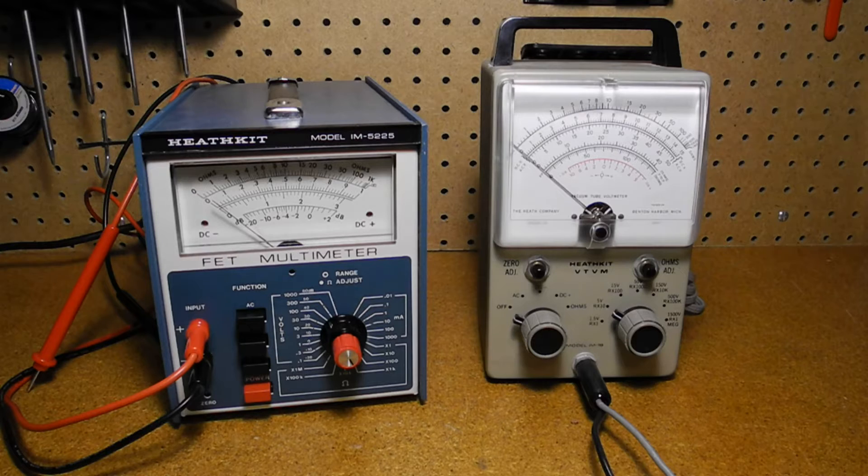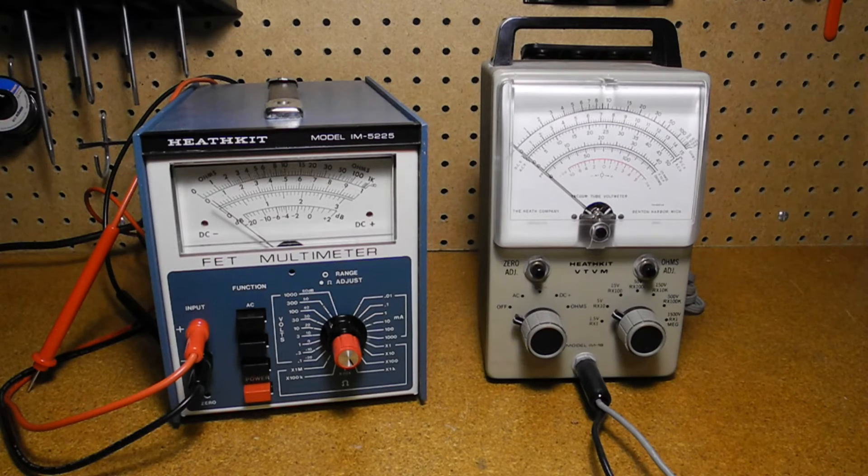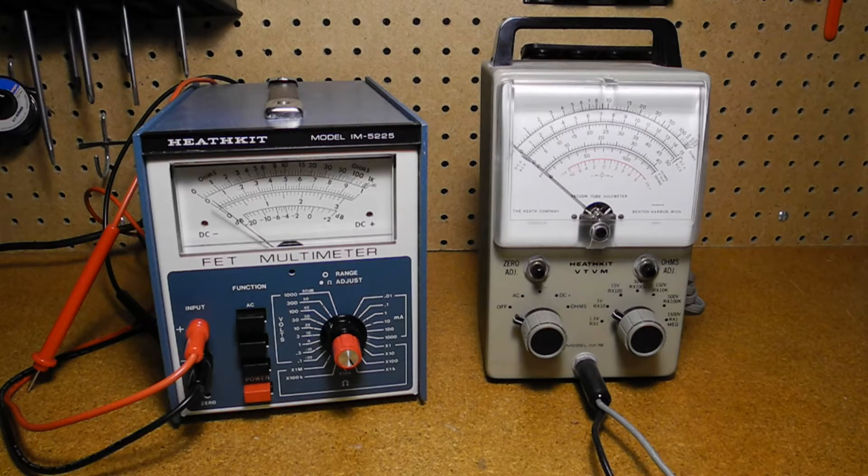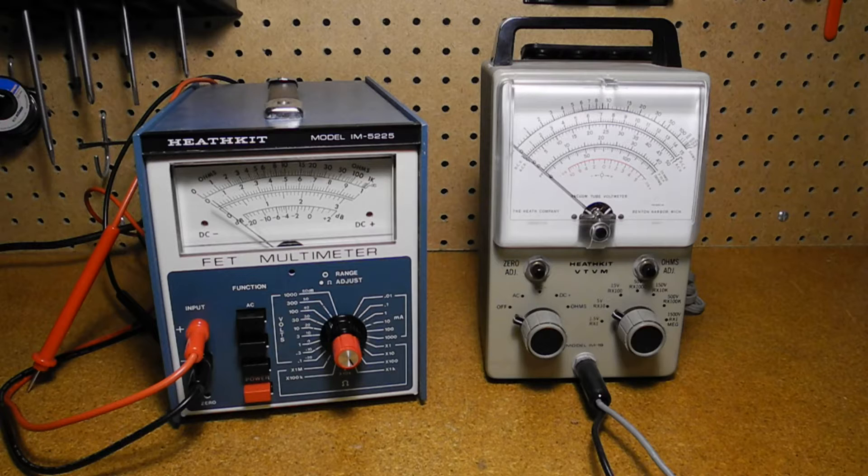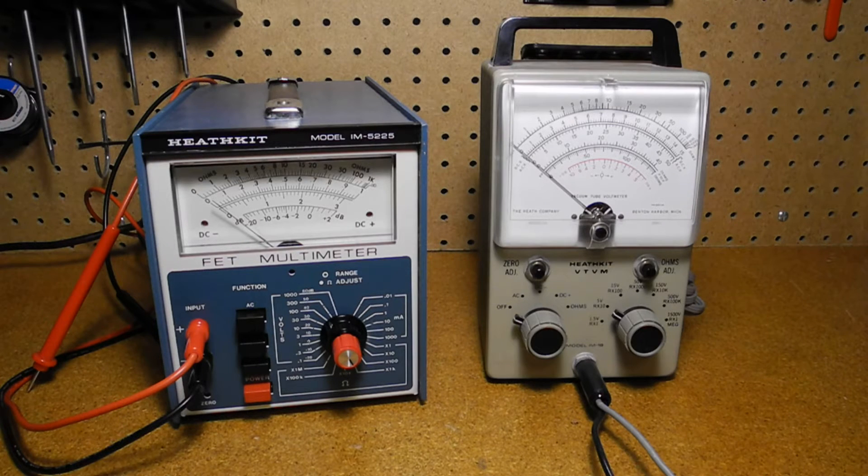An improvement was the vacuum tube voltmeter, or VTVM, which used vacuum tube amplifier circuits to present a high resistance, typically 10 or 11 megaohms, to the circuit under test and avoid loading it. With the advent of solid-state electronics, meters that used transistors rather than vacuum tubes were introduced, typically using field-effect transistors or FETs, which, like vacuum tubes, have a very high input resistance.